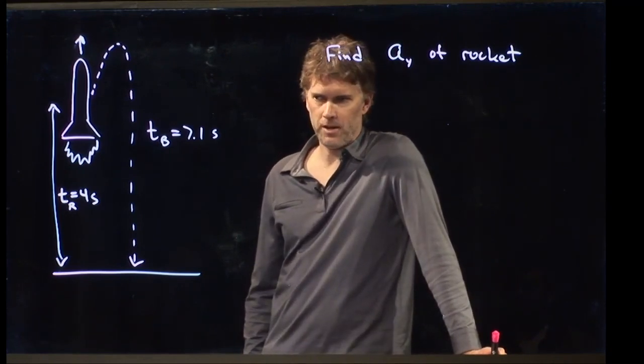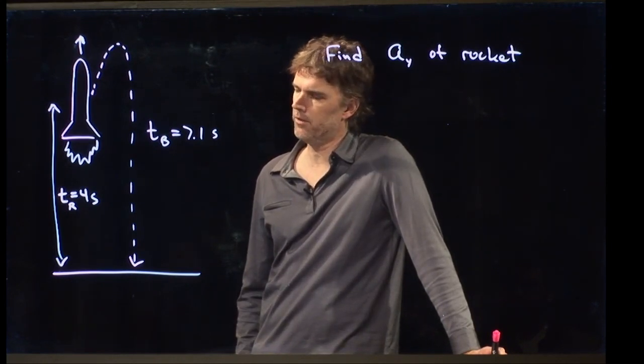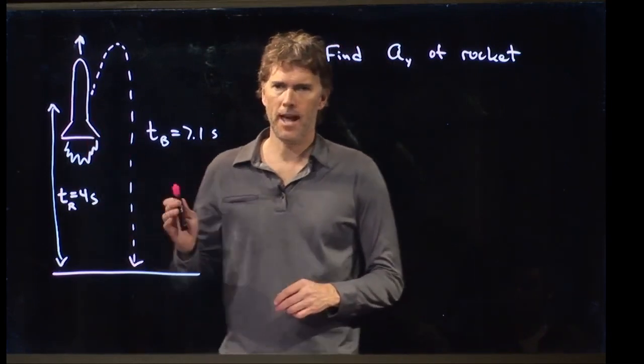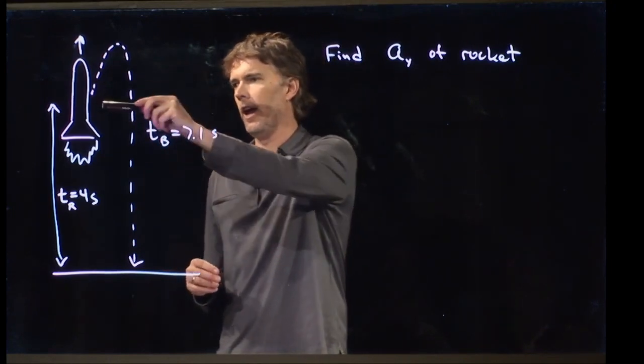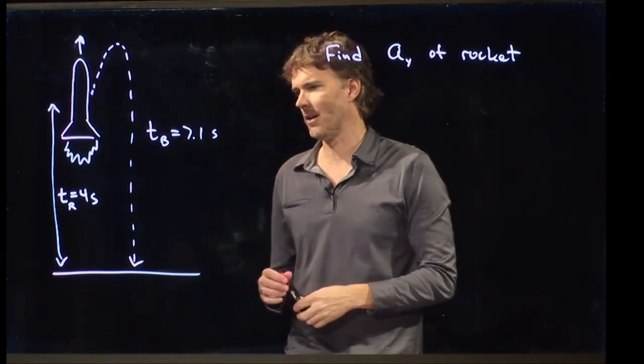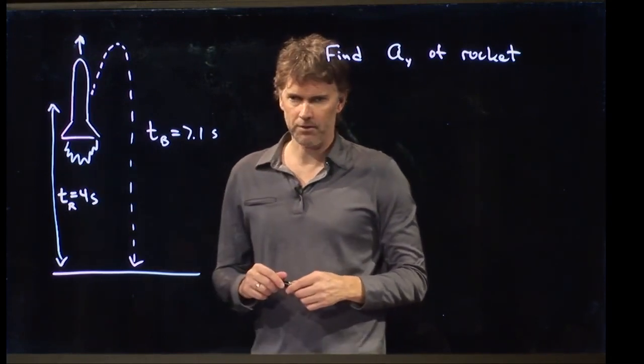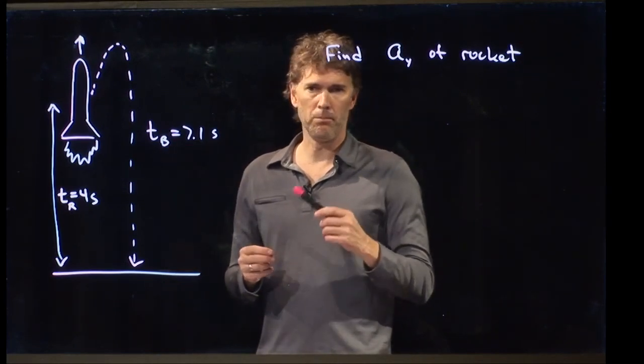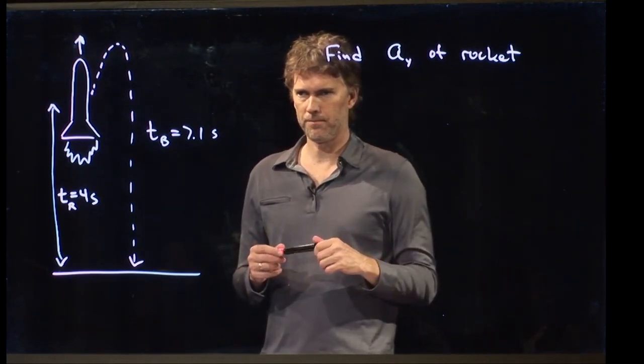Hello class, Professor Anderson here. Let's take a look at a problem that some of you are having some trouble with. This is the rocket problem. The idea is that we have a rocket that takes off and 4 seconds after takeoff, there is a bolt that falls off and the bolt follows this sort of trajectory. It rises a little bit and then it falls back down to Earth. And all we know is that at t equals 4 seconds, the bolt fell off the rocket, and 7.1 seconds is how long the bolt was in the air.